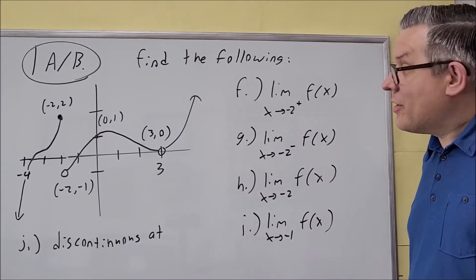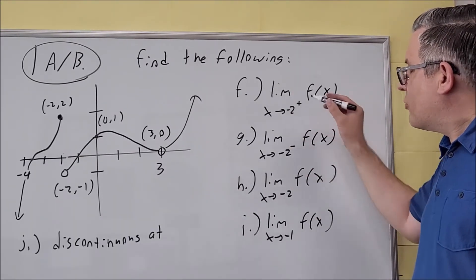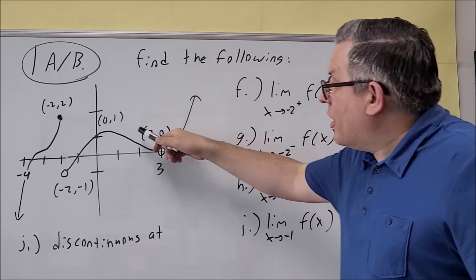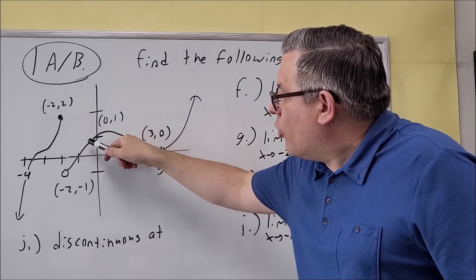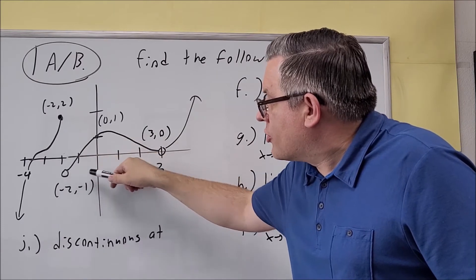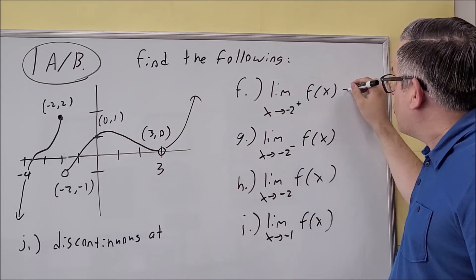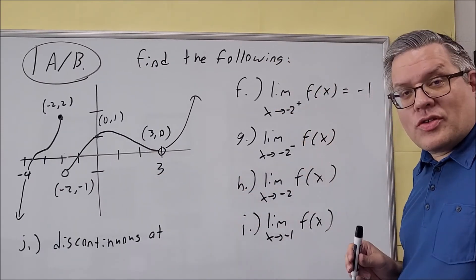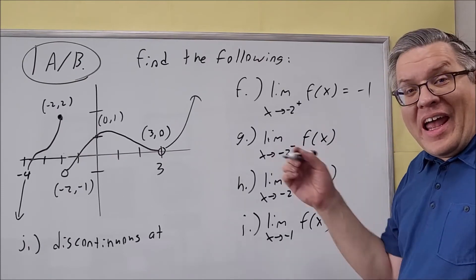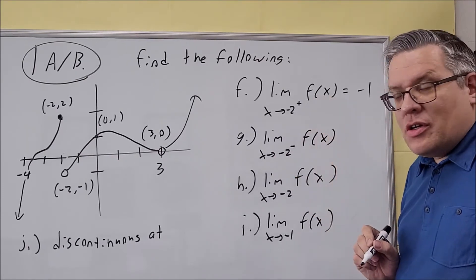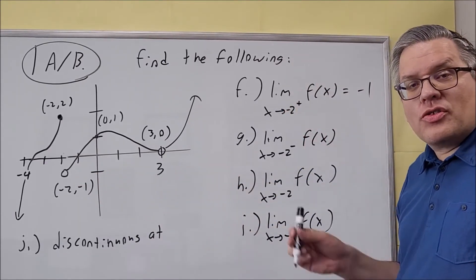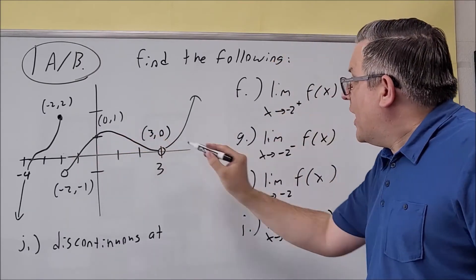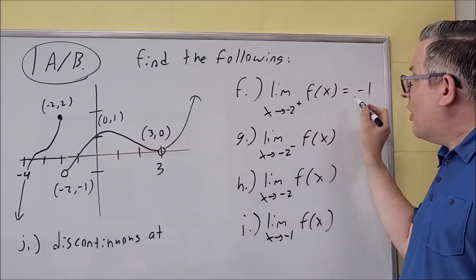For part f, the limit as x approaches negative two from the positive side — from the right — you're looking at where the y-value is approaching. It's approaching the open circle, so the y-value is negative one. Even though it's an open circle, we can still get this answer because it's asking for a limit, not f of negative two. It doesn't matter whether the circle is open or closed for a limit — the answer approaching from the right is negative one.